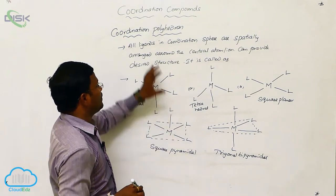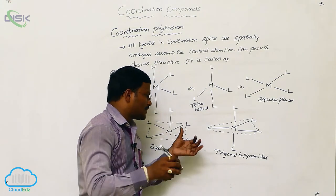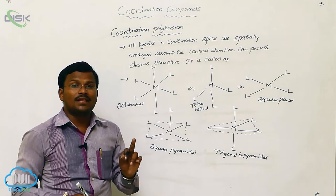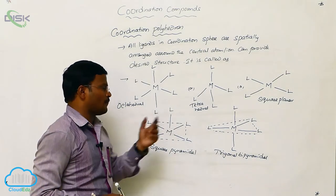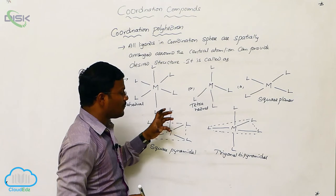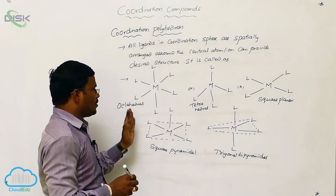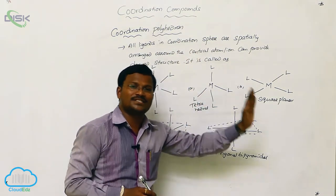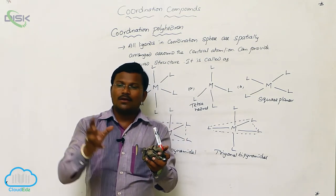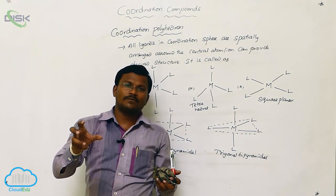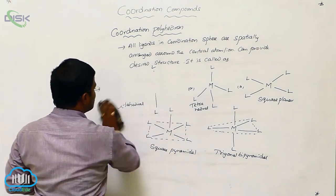Which type of geometry is exhibited by a given coordination compound generally depends upon: first, the number of ligands connecting to the central atom; second, the strength of the ligand — ligands may be weak field or strong field, and this also decides the geometry. Outside the coordination sphere, primary valencies are present, while inside the sphere the central atom satisfies secondary valency.